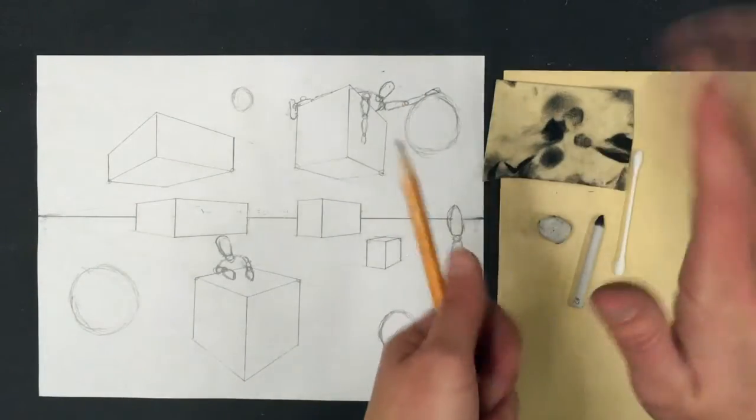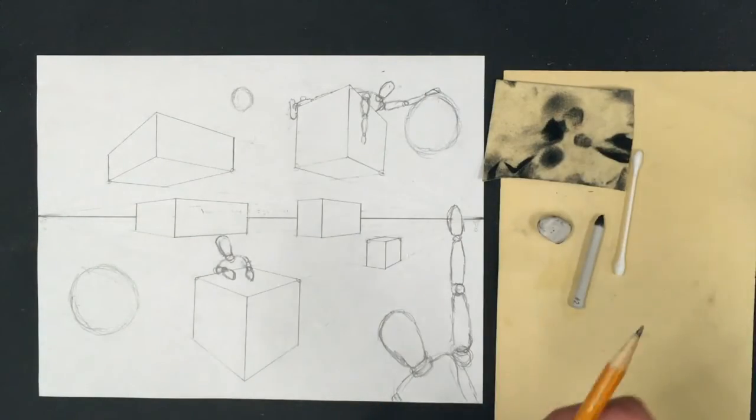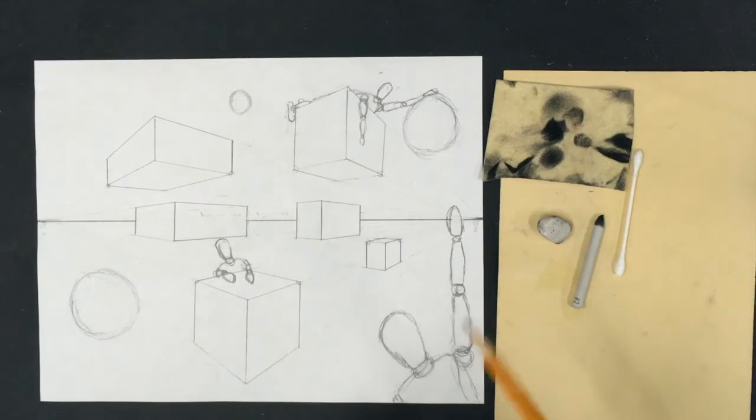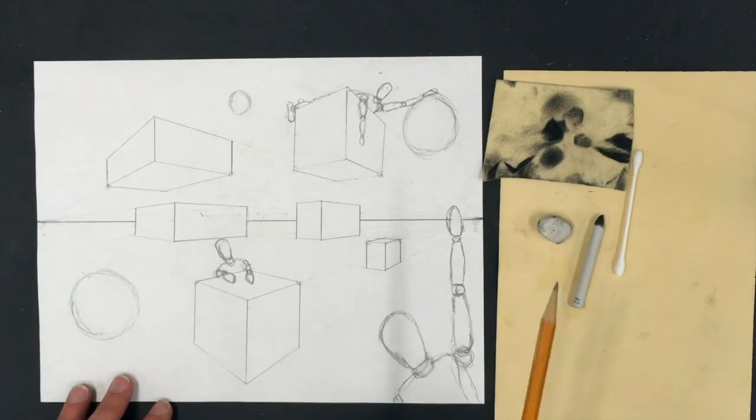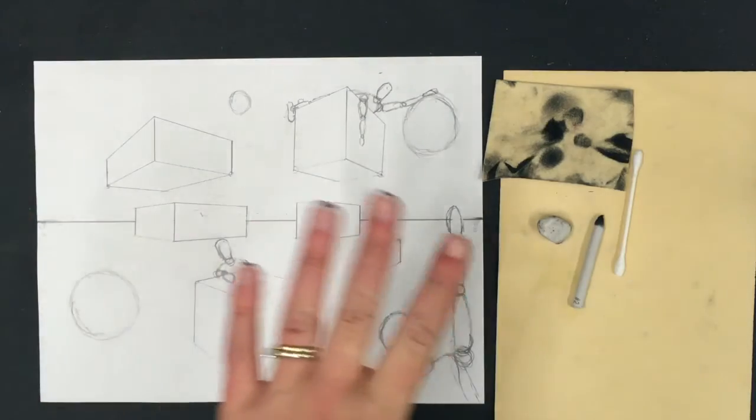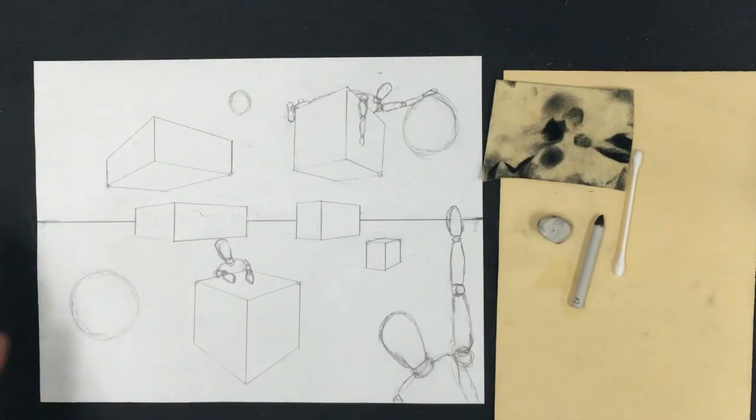First thing we want to declare is a light source. Now we discussed how this isn't realistic drawing - we've created an invented imaginary space. What we want to do is declare a light source so we can get a sense of form, a sense of these being three-dimensional.